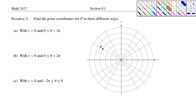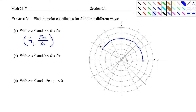Example 2: find the polar coordinates for point P in three different ways. With r > 0 and the angle between 0 and 2π, that's our standard representation. The radius is 4 and the angle is 5π/6. That's the standard way of writing it. Unlike the rectangular coordinate system, you can use different numbers in polar coordinates to represent the same point in the plane.